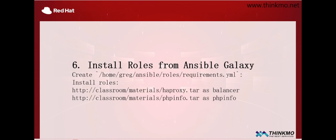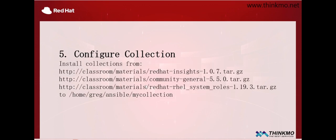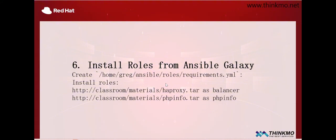According to the requirements of the question, we are using Ansible Galaxy to install roles. There are requirements regarding the role file name that everyone should pay attention to. The second point is about the two installation paths, which seem similar to the previous question. The difference is that this question focuses on installing two specific services: HAProxy and PHPinfo.